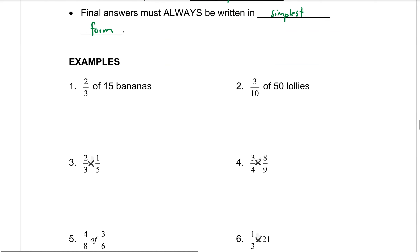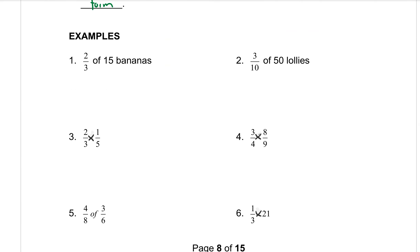Question 1 says to find two-thirds of 15 bananas. Two-thirds is my starting fraction. The word 'of' means to multiply, so we make that a multiplication sign, and we're going to multiply that by 15. That's a whole number, so any whole number should always be put over one. So I put 15 over 1. Now I want to solve it, preferably without the calculator. The first thing we do is look for things we can cancel — diagonally or on top of each other.